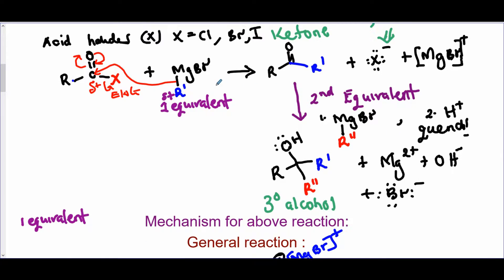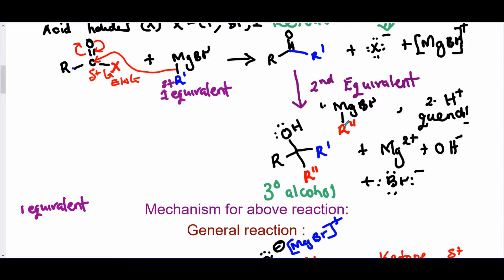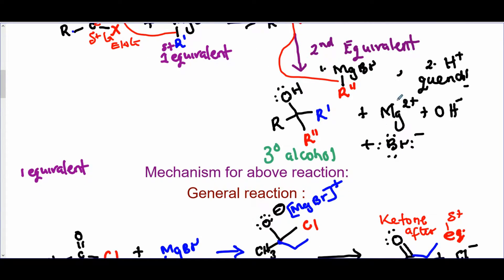Now, that's for the first equivalent of the Grignard. If you have a second equivalent, it's going to attack the carbonyl of the ketone. You end up with a tertiary alcohol after quenching the reaction with an acid. That carbon is partially positive. That opens up. So you lose the sp2 carbon, you get an sp3 carbon with a tetrahedral geometry. The rest are just byproducts.